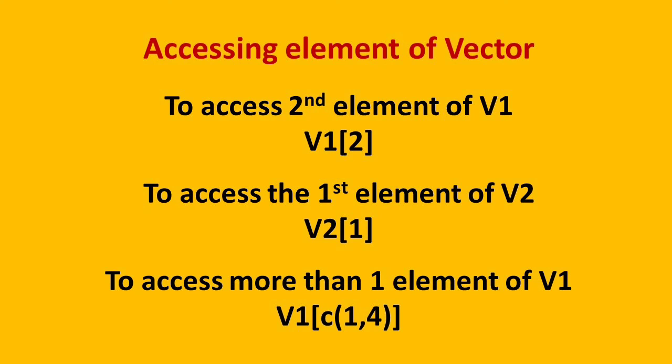On a concluding remark, to access any element of any vector or any data structure, we need to use square brackets. And inside the square brackets, we need to give the reference or index of that particular element which we want to access.